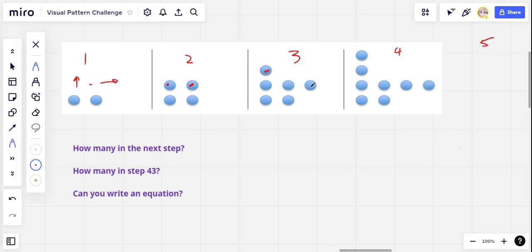then one off the top, one off to the side, one on top, one off to the side. So it looks like it's growing by two every turn. So for step five, I'd expect one on the top and one off to the side just like that.